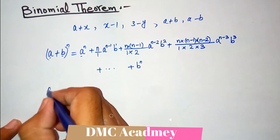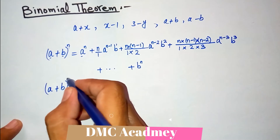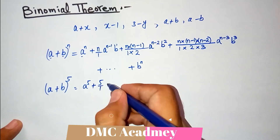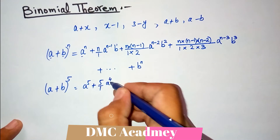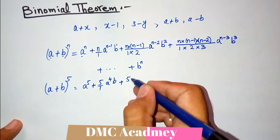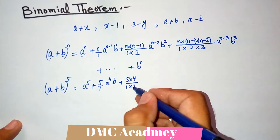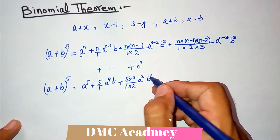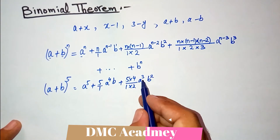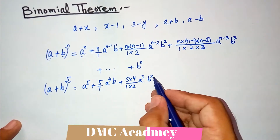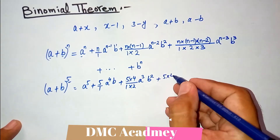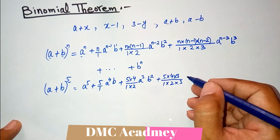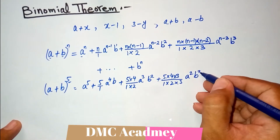If we have a plus b whole raised to power 5, then it gives: a raised to power 5, plus 5 divided by 1 times a raised to power 4 and b. Then plus 5 times 4 divided by 1 times 2, and a raised to power 3 — if you check the sum of powers, 3 plus 2 equals 5 — and then b raised to power 2. Plus 5 times 4 times 3, divided by 1 times 2 times 3, and a raised to power 2 and b raised to power 3.